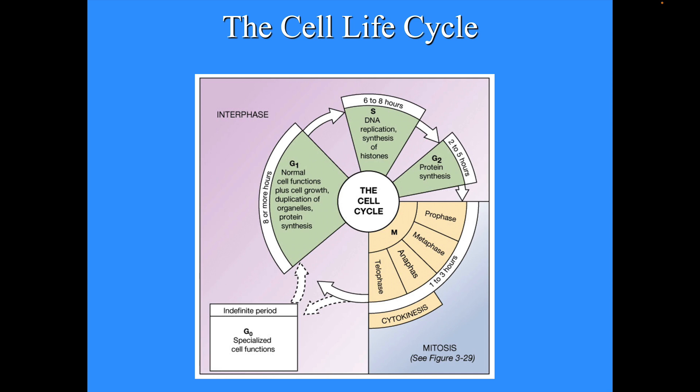Mitosis is subdivided into prophase, metaphase, anaphase, and telophase. Cytokinesis kind of encompasses part of anaphase and telophase. So you have these phases of actual cell division, and then there's an indefinite period — the G0 — where the cell just kind of does its thing.